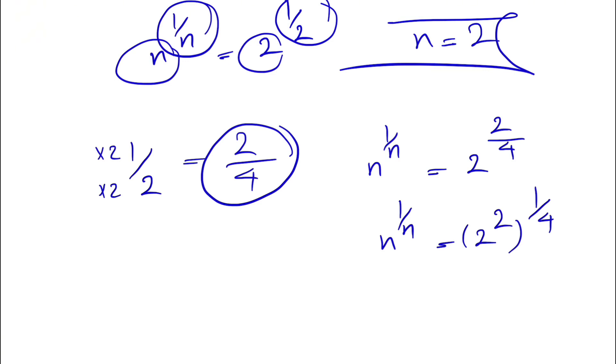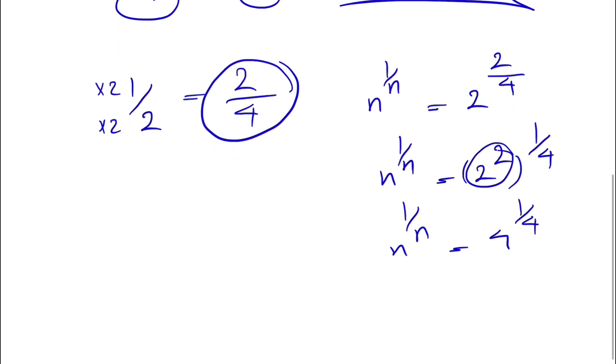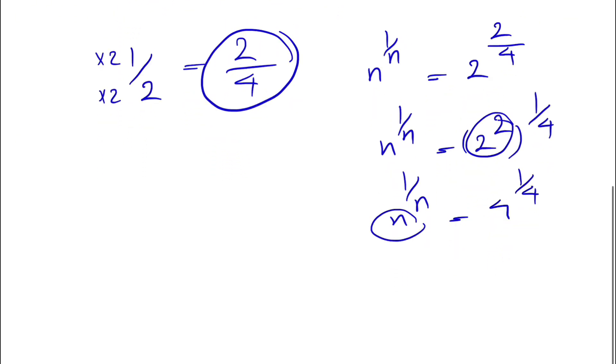So now we have another condition here, n to the power of 1/n is equal to 2 squared is 4, and we have 4 to the power of 1/4. Meaning again, if we compare the base and exponent, we can figure out that n is equal to 4 is another answer.